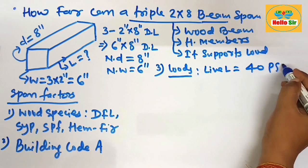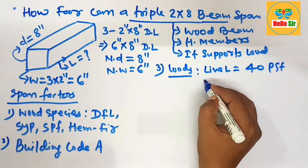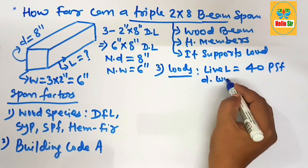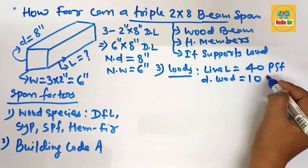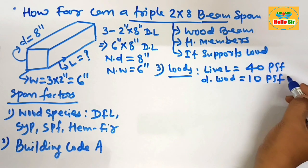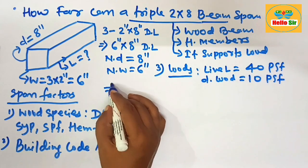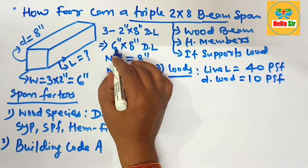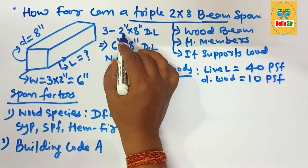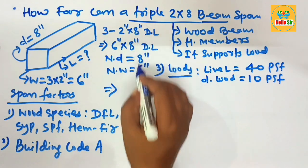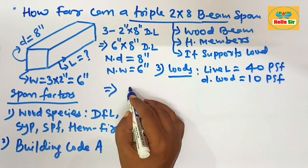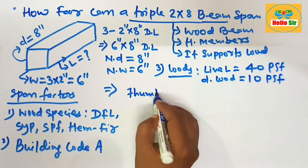The live load, suppose, is about 40 PSF and the dead load about 10 pounds per square foot. And the nominal size of this beam is three pieces of 2x8 inch dimensional lumber.